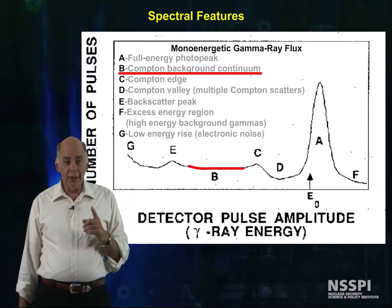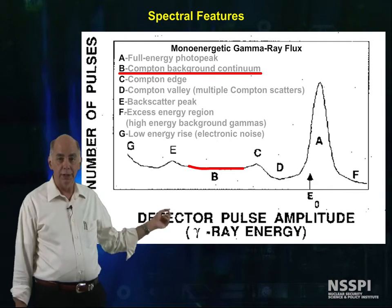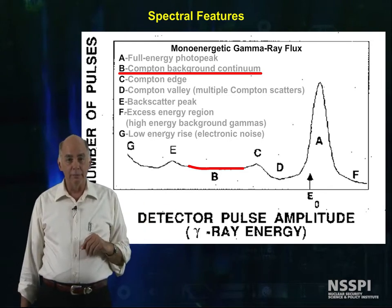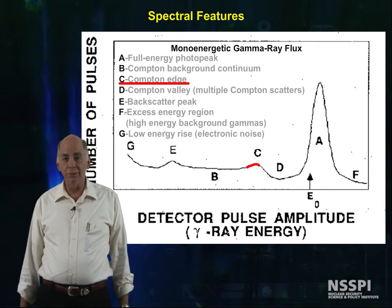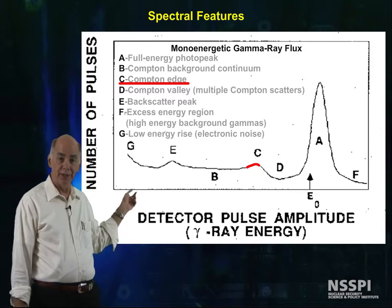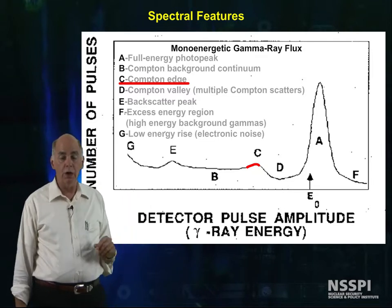For single Compton events, we see the Compton background and continuum. We didn't derive the equations, but there's a maximum energy that can be given to the Compton electrons, and that's represented by C here, and it's called the Compton edge.